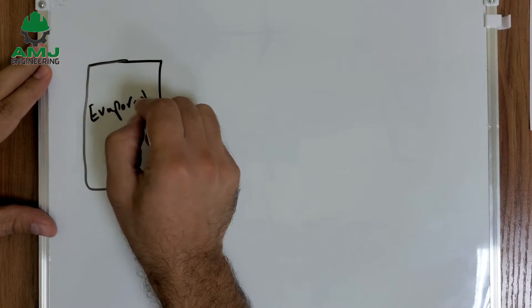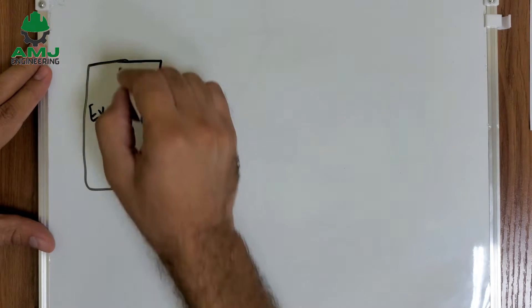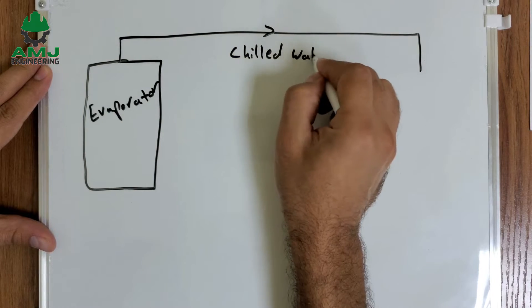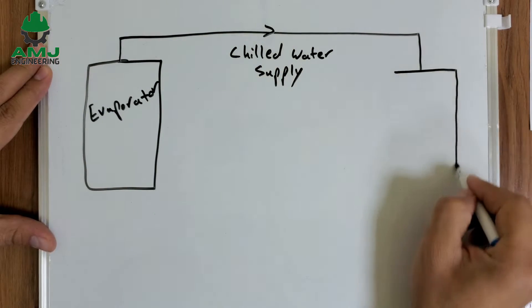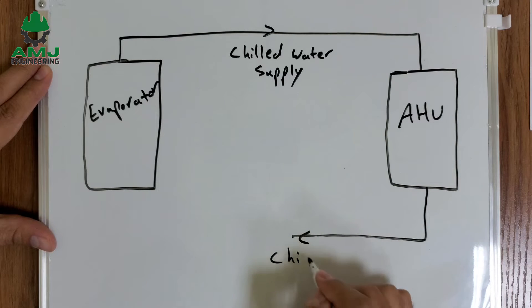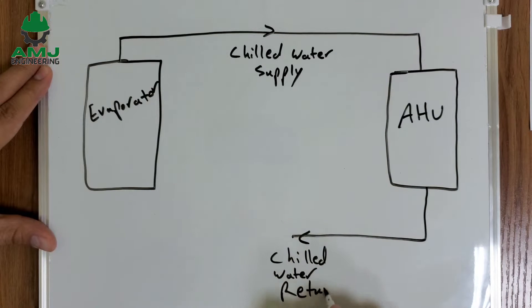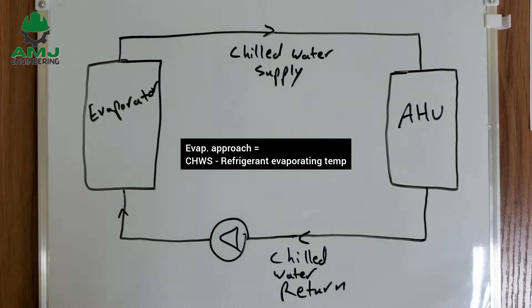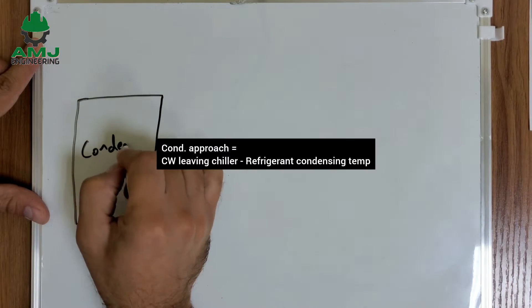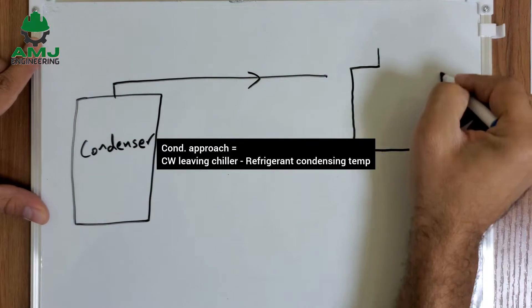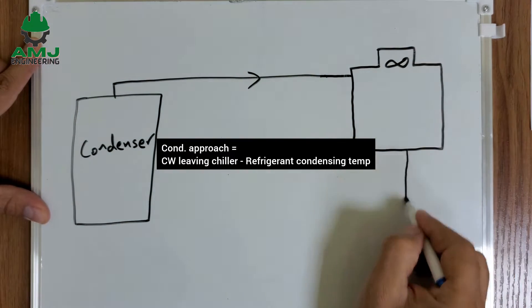What is chiller approach? Chiller approach is the temperature difference between the water and the refrigerant. Because there are two heat exchangers in a chiller, we have two types of approach: evaporator approach, which is the temperature difference between the chilled water supply and the evaporating refrigerant, and condenser approach, which is the temperature difference between the condenser water leaving the condenser and the condensing refrigerant.